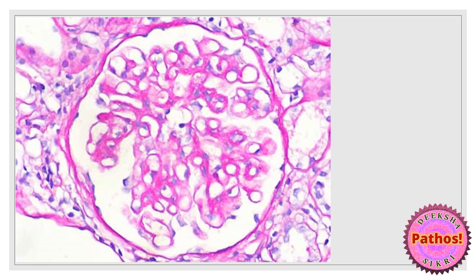Remember, periodic acid-Schiff stain gives you a nice rose-pink or magenta color. What you see is a background of pink with something a little brighter pink highlighted on it. All the basement membranes come PAS-positive: Bowman's capsule, the mesangium, the capillary basement membrane, and even the tubular basement membrane. So when I want to assess the mesangium or capillary basement membrane, I can use a PAS stain.